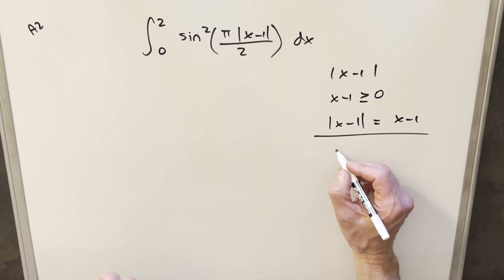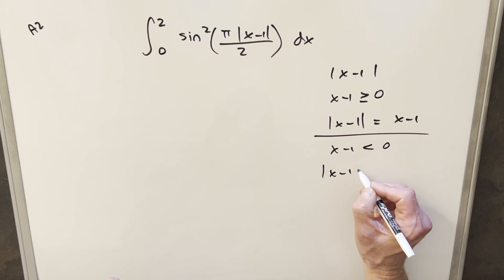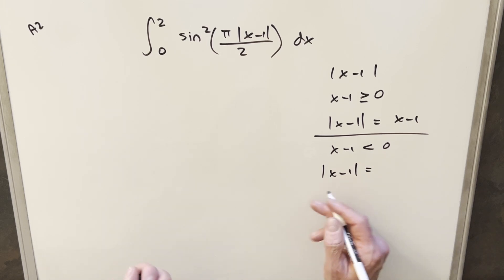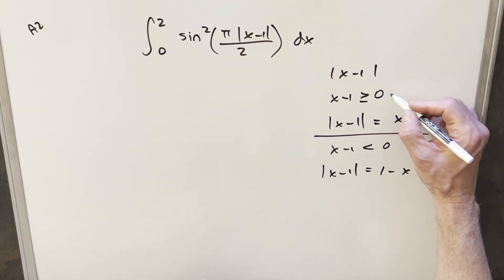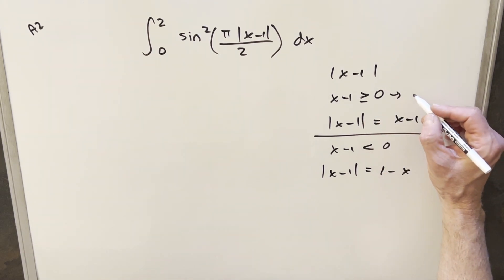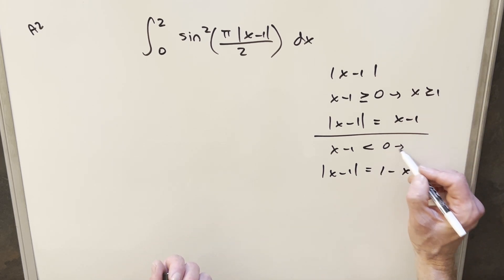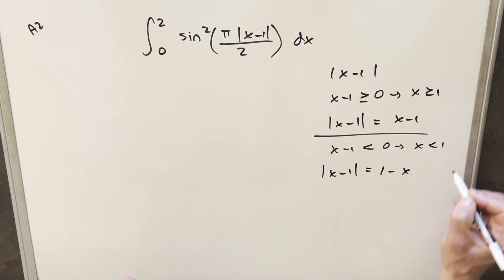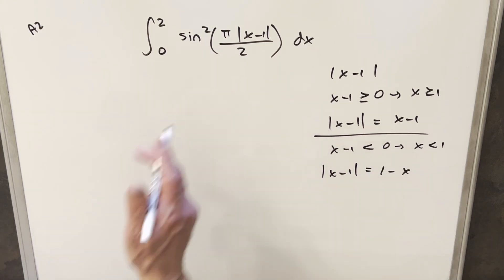And then we'll look at the other case, which is just when x minus 1 is less than 0. And in that case, we can just reverse the sign, and we can write this as 1 minus x. I can write x minus 1 greater than 0 as x greater than or equal to 1, and here I can write this as x less than 1.